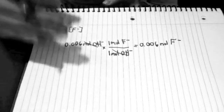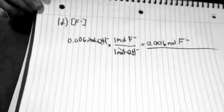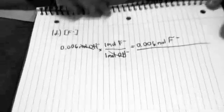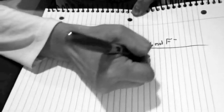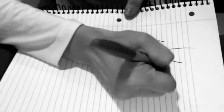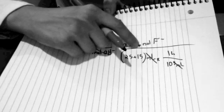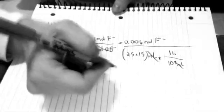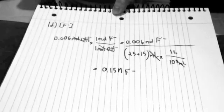But they're not asking me for moles of fluoride — they're asking for the molarity of fluoride. Molarity is always moles of solute divided by total liters of solution. On the bottom I have the total volume: 25 plus 15 milliliters = 40 milliliters = 40 × 10⁻³ liters. So I divide 0.006 by 40 × 10⁻³, and I get a final answer of 0.15 molarity for fluoride. That's part 1D.